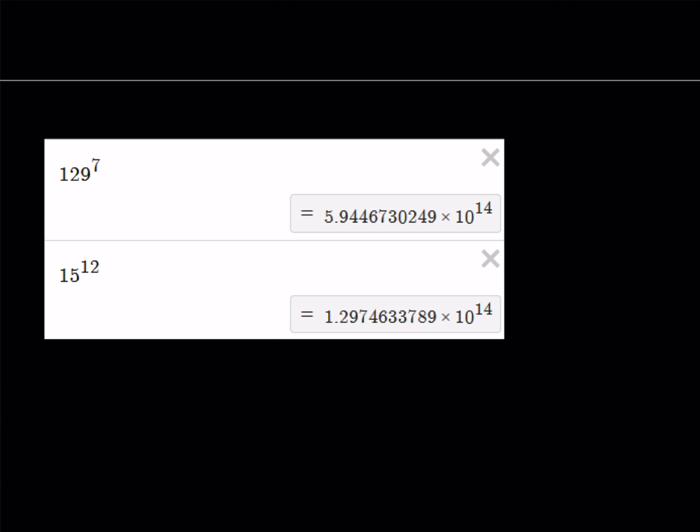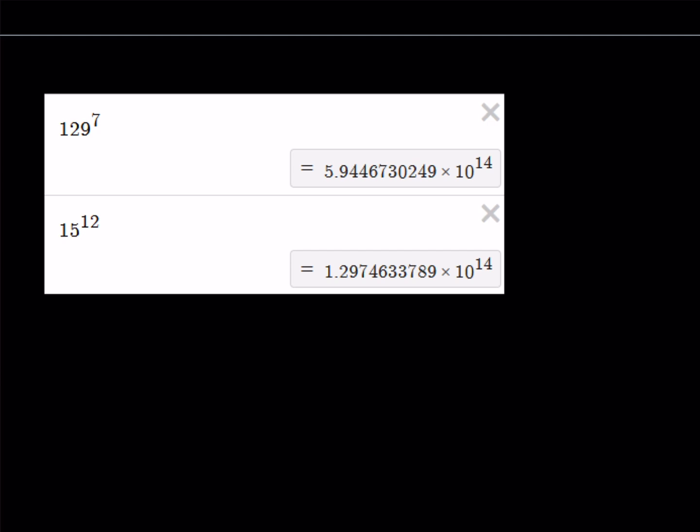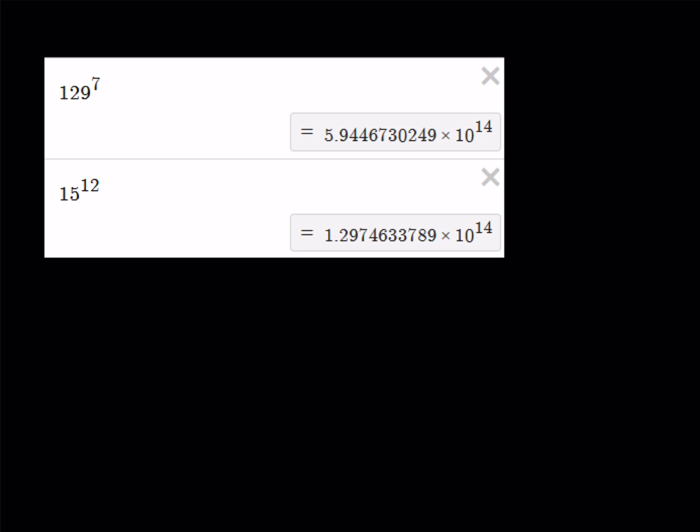129 to the 7th power is 5.9446 times 10 to the 14th power, and 15 to the power of 12 is 1.2974633 times 10 to 14th power. So, they have the same number of digits. So, one of the numbers is roughly 5 times the other number. That kind of tells me maybe there's another way. Obviously, there's more than one way to do this, and I'm pretty sure you're going to share that in the comments section. And this brings us to the end of this video.